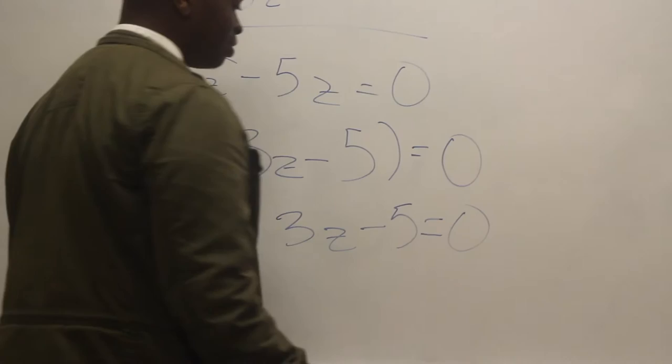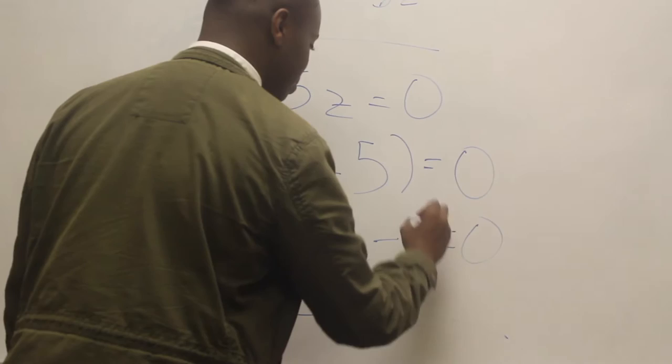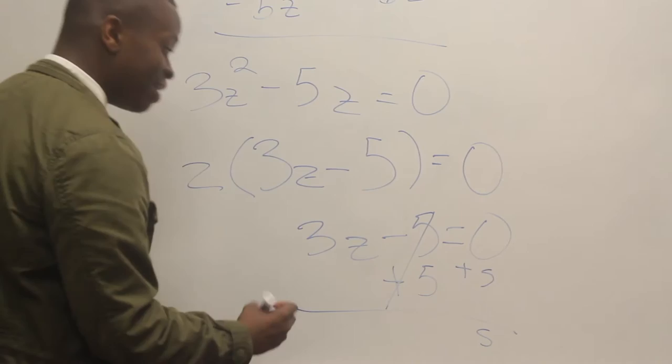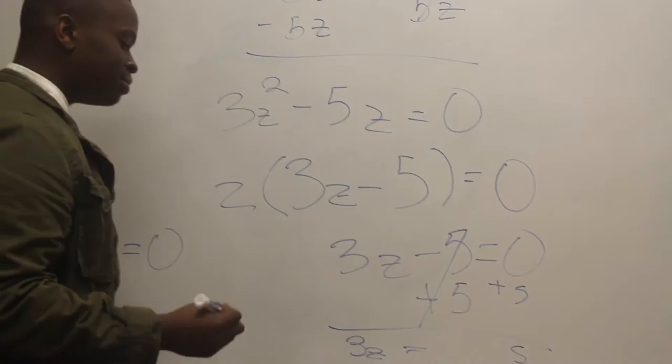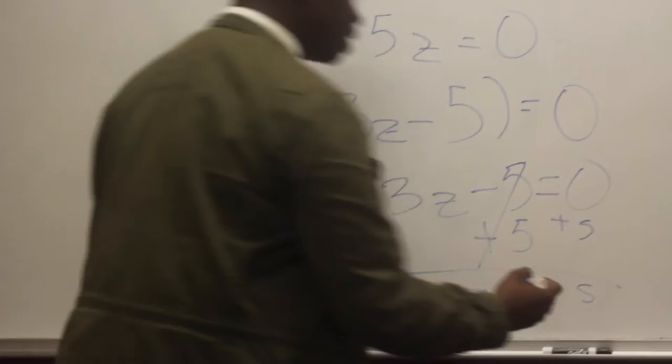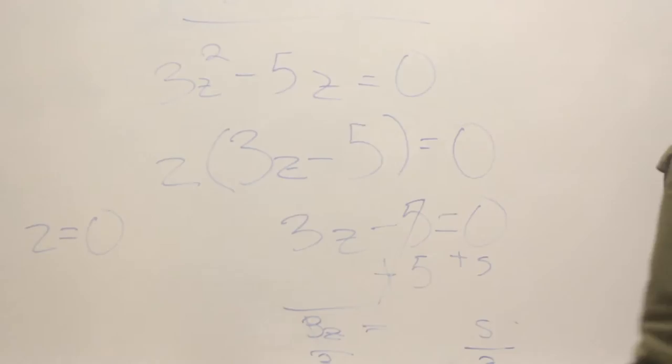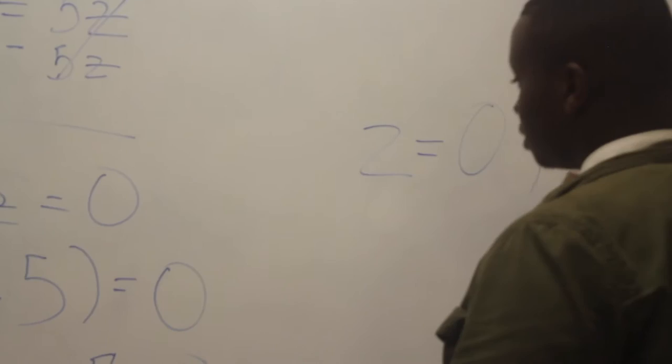For the second equation, you solve it like a regular equation. You start by adding five to both sides in order to get Z by itself — that gives you three Z equals five. Then you divide by three on both sides; the threes cancel, and you get Z equals five over three. So your two answers are Z equals zero and Z equals five over three.